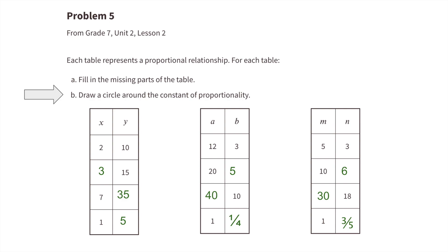Part b: draw a circle around the constant of proportionality. On the first table, the constant of proportionality is 5. On the second table, the constant of proportionality is one-fourth.